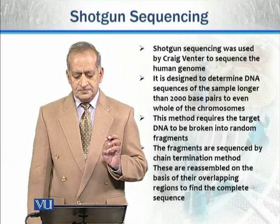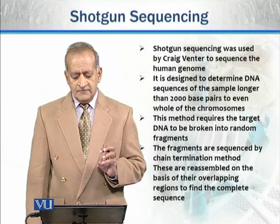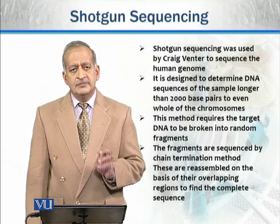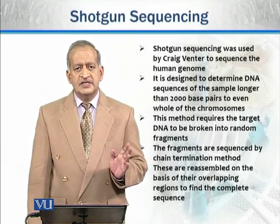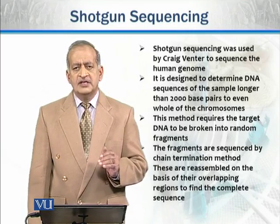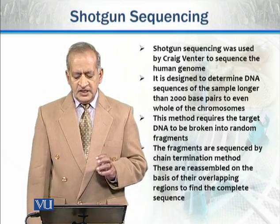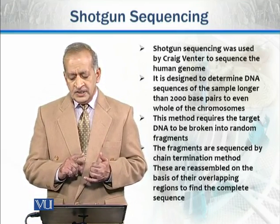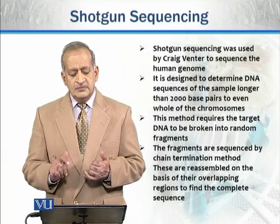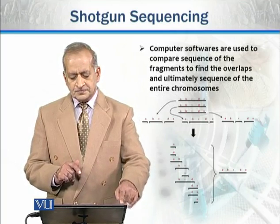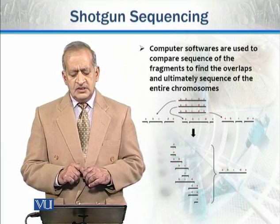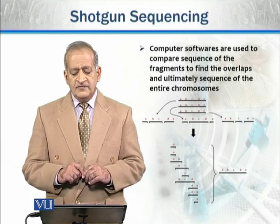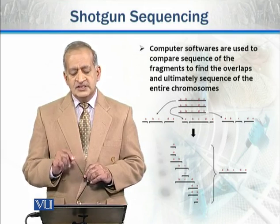This method requires the target DNA to be broken into random fragments, and then each fragment is sequenced by the chain termination method, as discussed earlier in the Sanger method. These fragments are then reassembled on the basis of their overlapping regions to find the complete sequence. Computer software is used to compare the sequences of the fragments to find the overlaps, and ultimately determine the sequence of entire chromosomes.